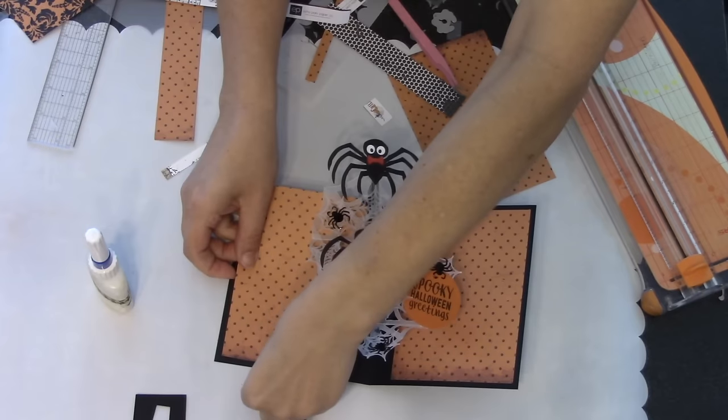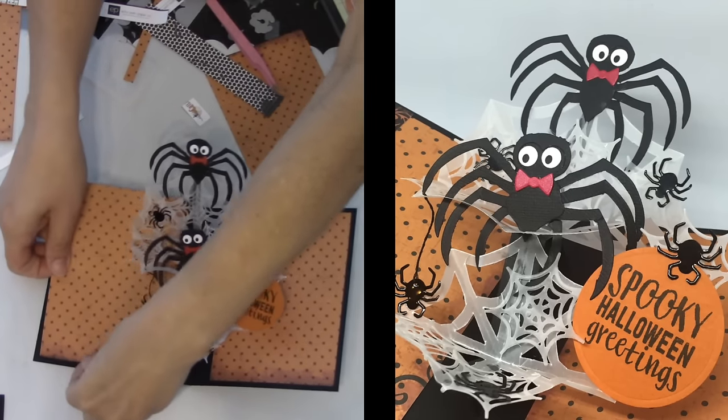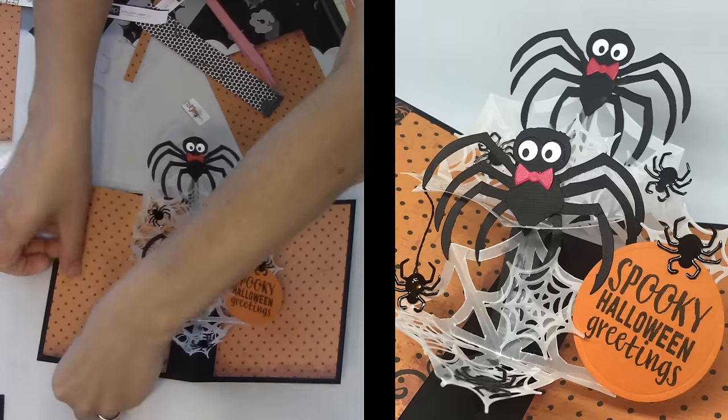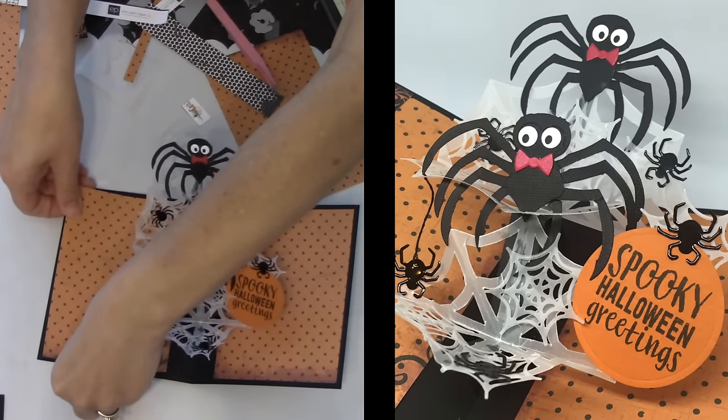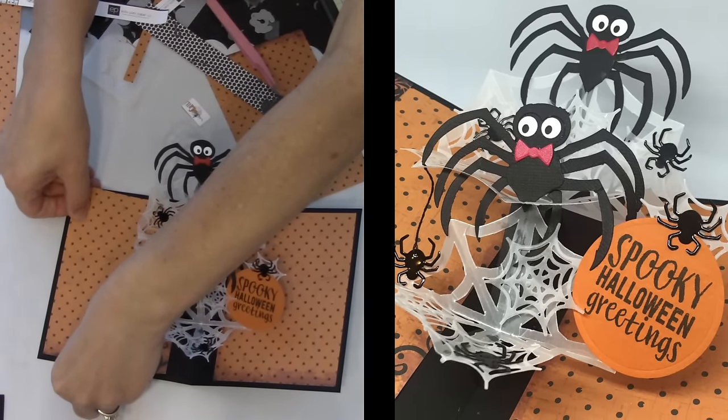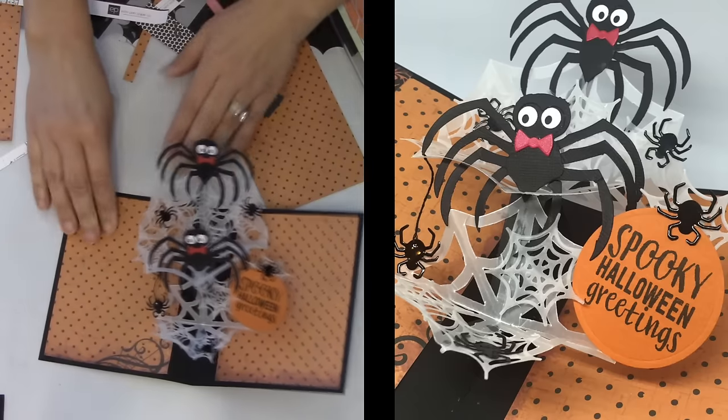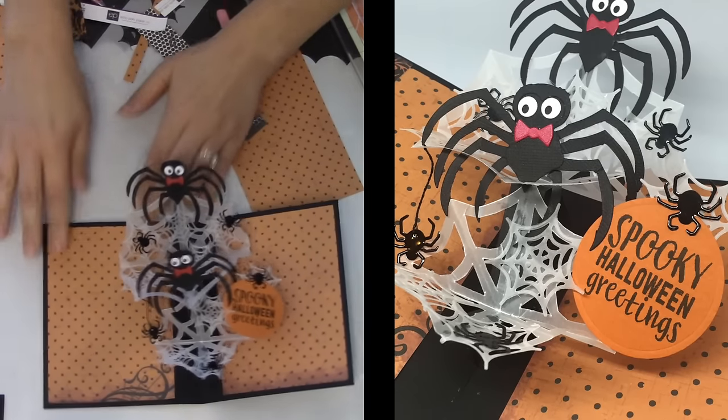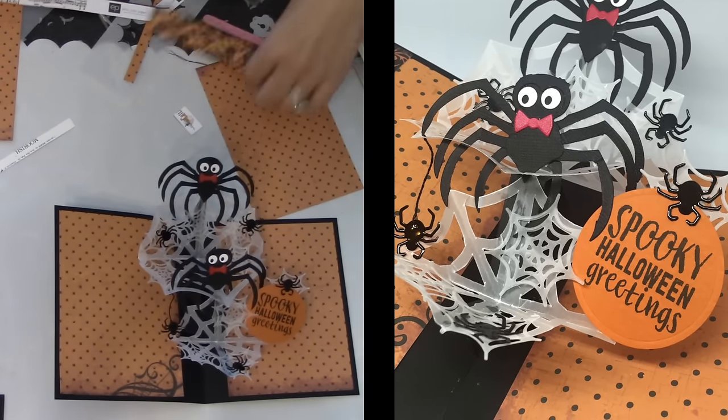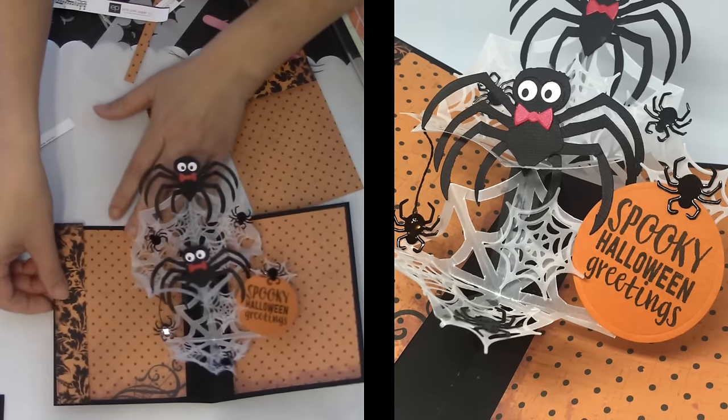I went stash diving to find some Halloween papers and found a couple styles in orange. I thought orange would be a nice way to put it in the background of the card so that those black shimmer sheet spiders that I had cut and decorated the sculpture would show up better against that orange shining through the webs. And then I also added a couple little strips on the outside.